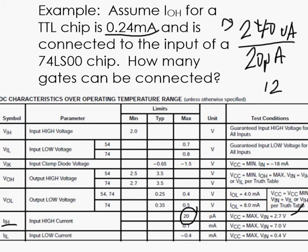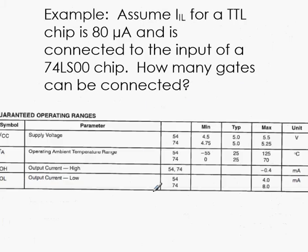Now let's look at another example. Here, we're going to assume that the I input low for that same TTL chip is 80 microamps, and it's connected to that same chip, 74LS00. And we want to know how many gates can be connected. Well, this is the low condition, so we know the current will flow out of the second gate into the first gate. And this is the current being used by each gate.